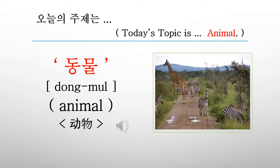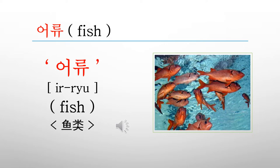Today's topic is 동물. 동물 is called an animal in English and it is called 동우 in Chinese. In this chapter, we will study the Korean word for the animals in the water, that is, a fish. Fish is called 어류 in Korean and it is called 与尼 in Chinese.